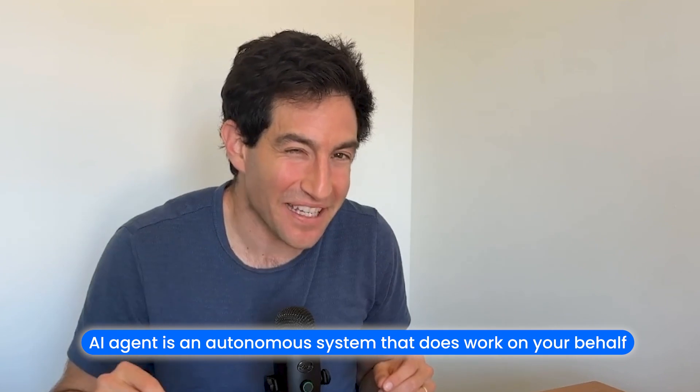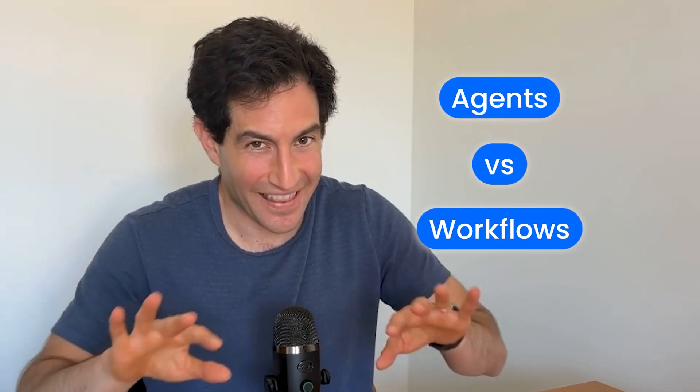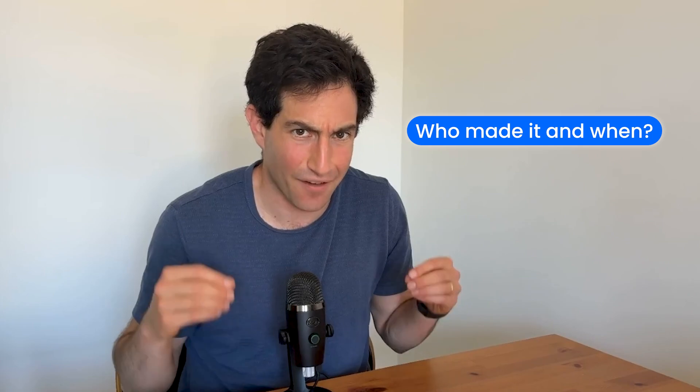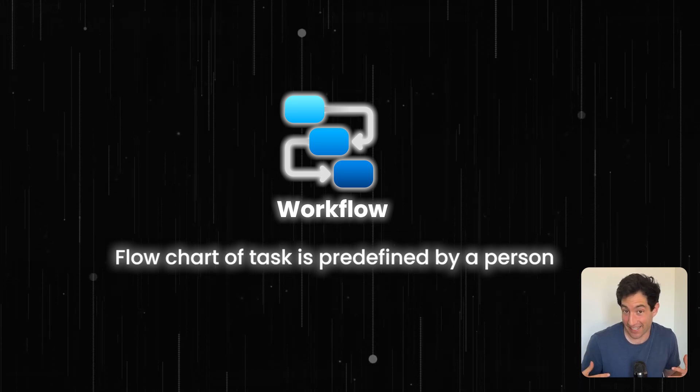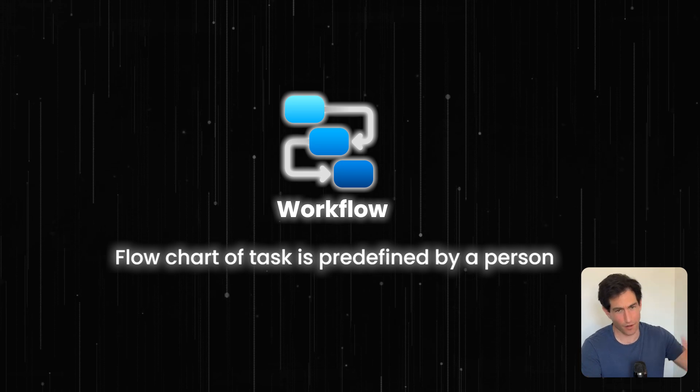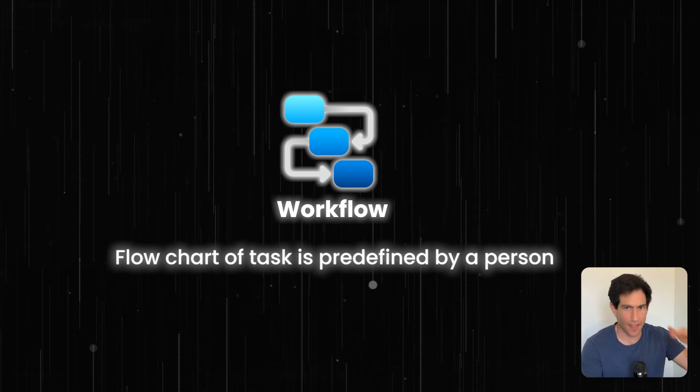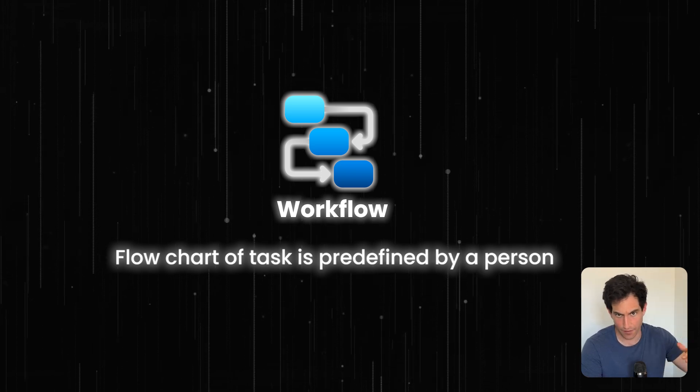Now that we've created a practical definition of an AI agent — an autonomous system that does work on your behalf — I want to briefly touch on the topic of agent versus workflow. Any task that you accomplish in the real world has some flowchart associated with it. There's a first step, then a second step, then maybe a conditional path, and maybe an iterative loop where you do the same thing over and over until some condition is reached. The difference between a workflow and an agent is who makes that flowchart and when. In a workflow, the flowchart is predetermined by the person architecting the workflow. So you write down the flowchart in advance: first, you receive an email; then you check if it's a cold sales email; then you respond automatically.